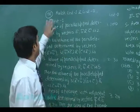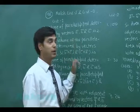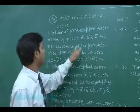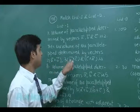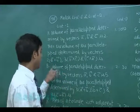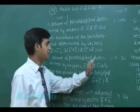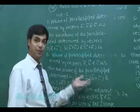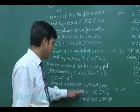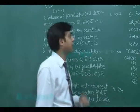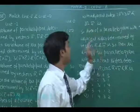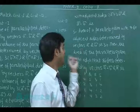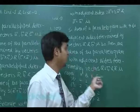Let's consider the next matching list. List one has statements, list two has some values. First: volume of parallelepiped determined by vectors a, b, c is two, then find the volume determined by 2a×b, 3b×c, c×a. Second: volume is five, find the volume for 3(a+b), b+c, 2(c+a). Third: area of a triangle with adjacent sides a and b is 20, find the area with sides 2a+3b and a−b. Fourth: area of a parallelogram with adjacent sides a and b is 30, find the area with sides a+b and a.